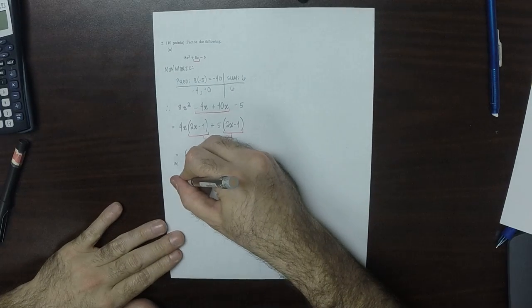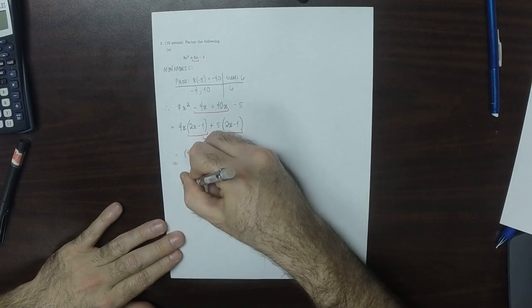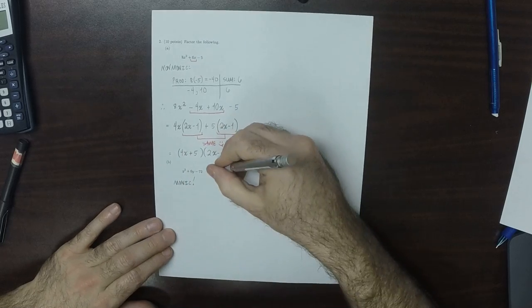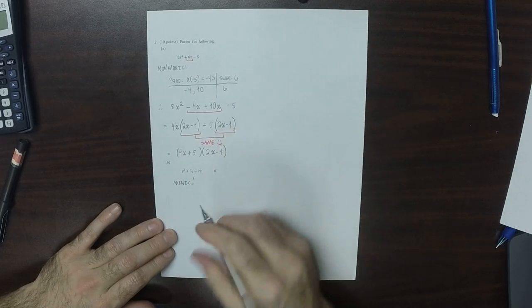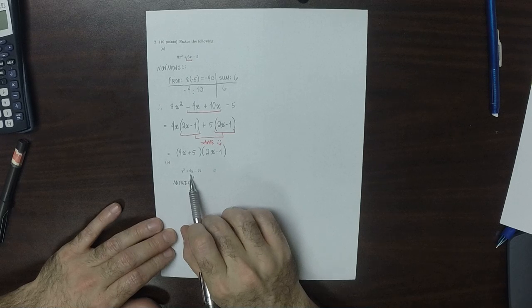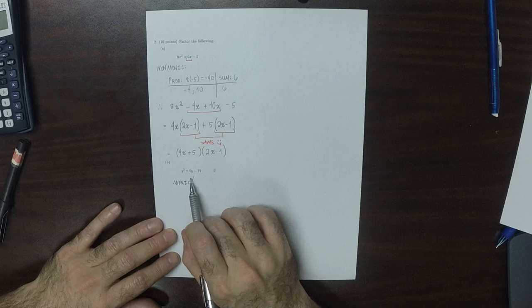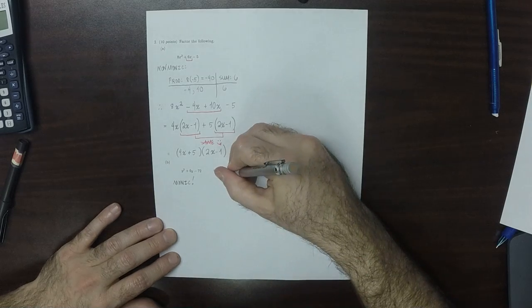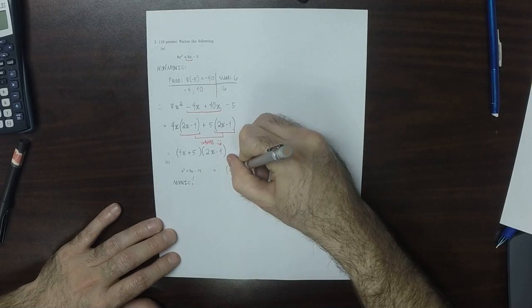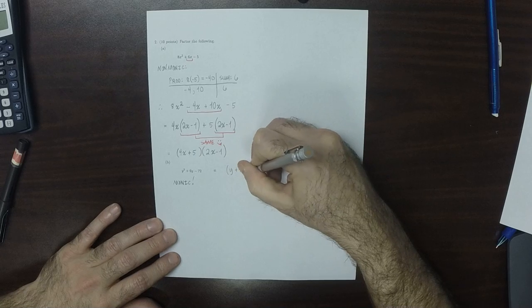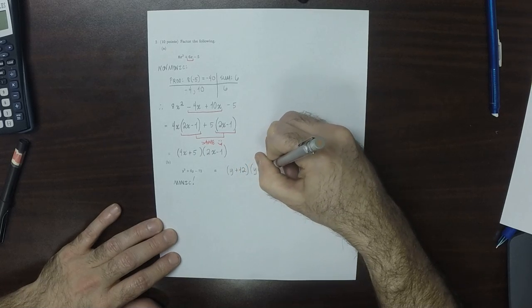This one is monic, so that's terrific. That means it's the easy kind. So can we think of two numbers whose product is negative 72 and whose sum is positive 6? 12 and negative 6. So that would be y plus 12 multiplied by y minus 6.